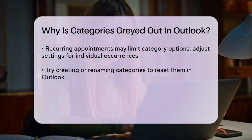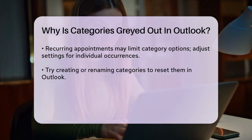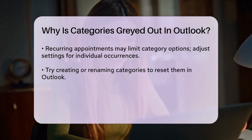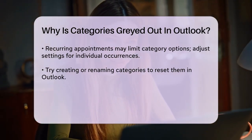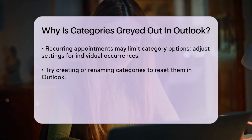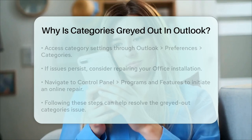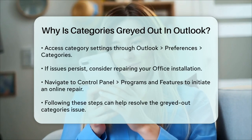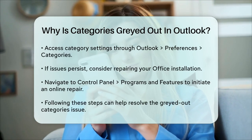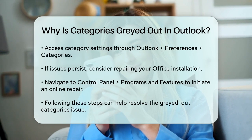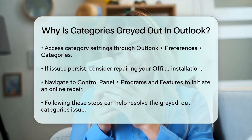To troubleshoot further, you can try creating or renaming your categories. Go to Outlook, Preferences, then Categories in the Outlook menu bar. This can sometimes reset the categories and make them available again.